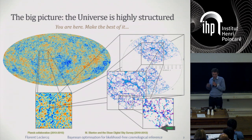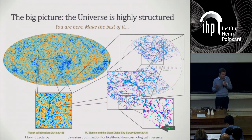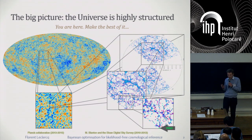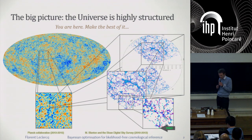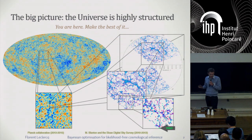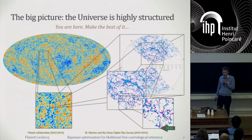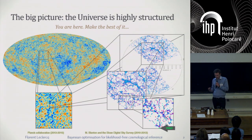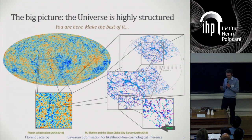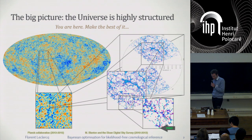Essentially the big picture is here: the universe is highly structured at all scales, and we want to make sense of this structure, in particular in connection to our observations. It turns out that this is something that we can very well simulate. So the question is, how do you make the connection between these simulations and our observations?